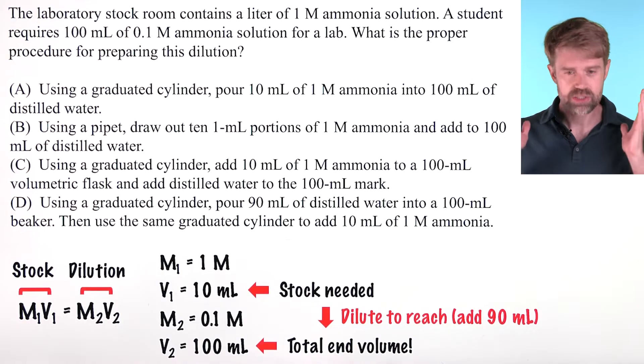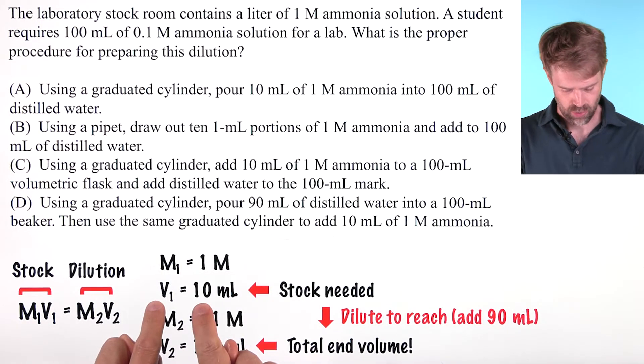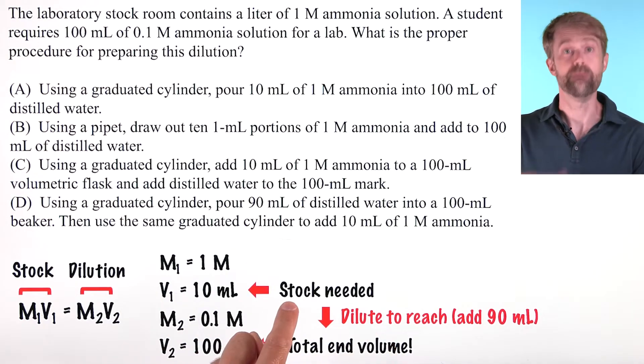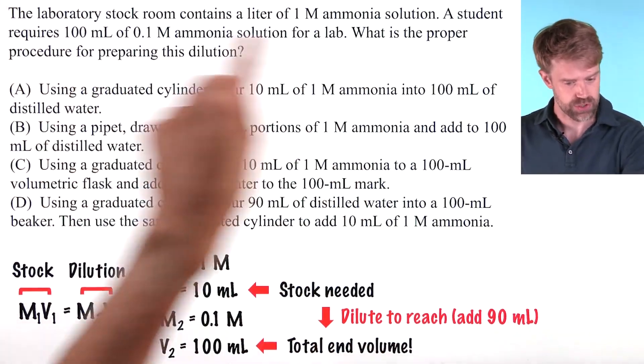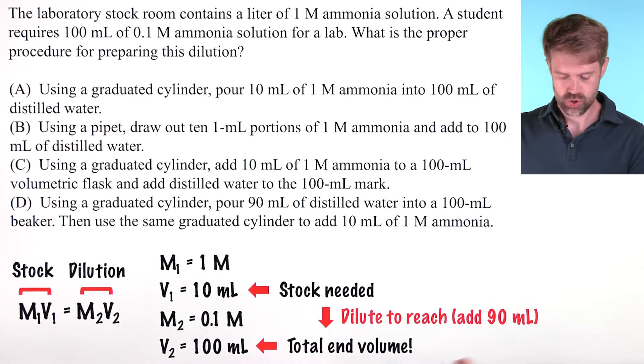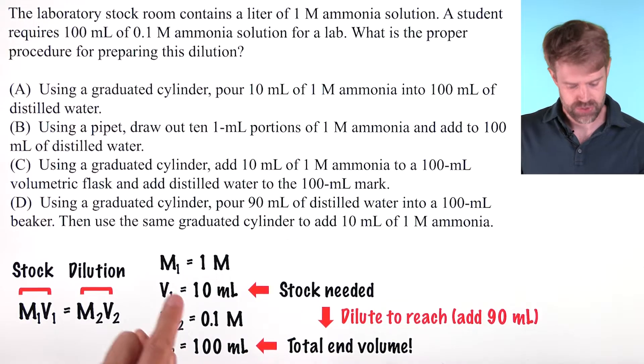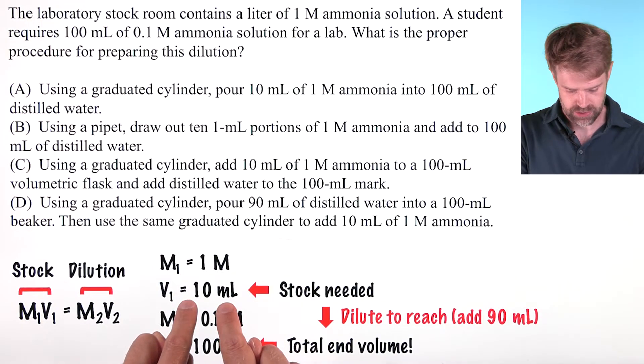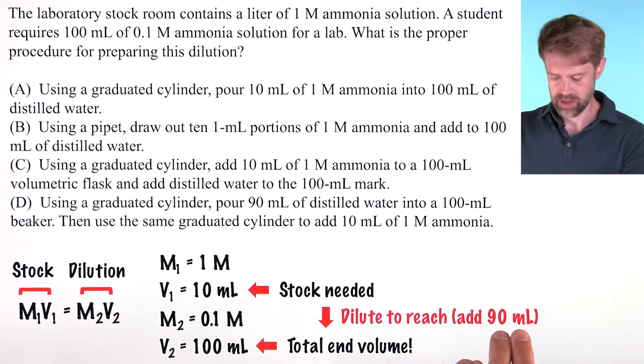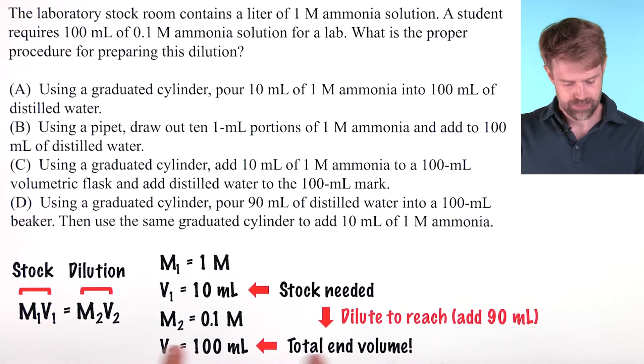This is the most common mistake that's going to happen. V1 represents the volume, the amount of the stock solution that you have to dilute with distilled water to reach this final end volume. So we're starting with 10 milliliters of stock solution. We add 90 milliliters of water, and we end up with this final volume.